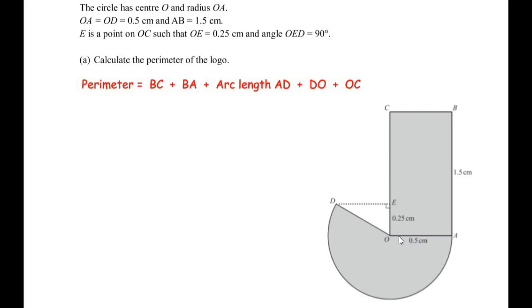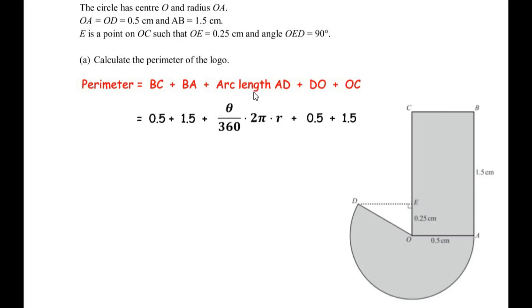The length of BC is equivalent to OA because it's a rectangle, so opposite sides are equal — BC is 0.5, BA is 1.5, OD is the radius hence 0.5, and OC equals AB so it is 1.5. The arc length needs to be found using the formula theta over 360 times 2πr, where theta is the central angle of the major sector which is not yet given, and the radius is 0.5.